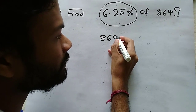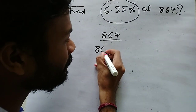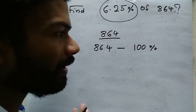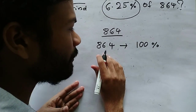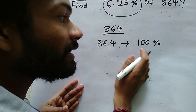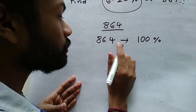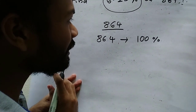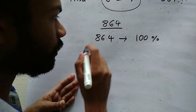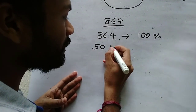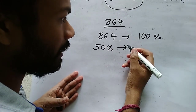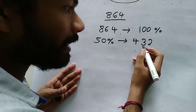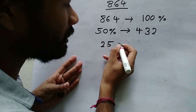First of all, please write the number 864. You all know that 864 is 100 percentage of 864. What will be the 50 percentage of 864? It is half of 100 percentage. So if you divide by 2, or find half of 864, you will get 50 percentage of this number. So 50 percentage of 864 is half of 864, that is 432.